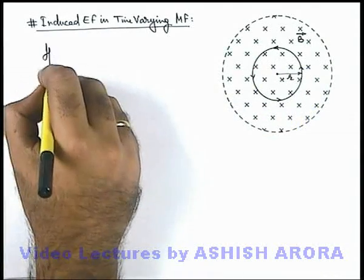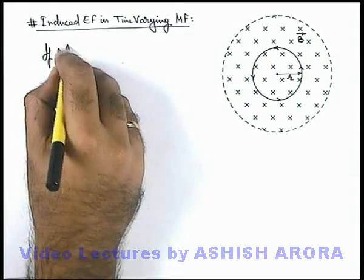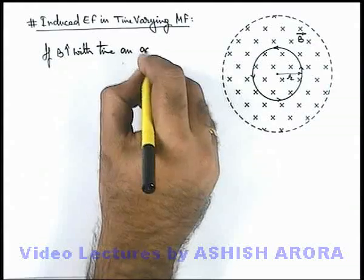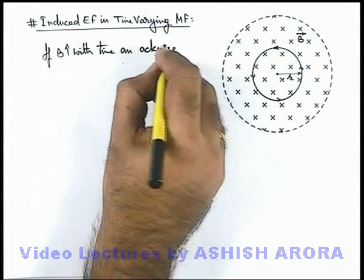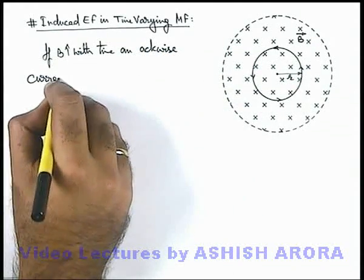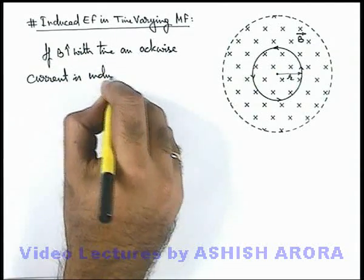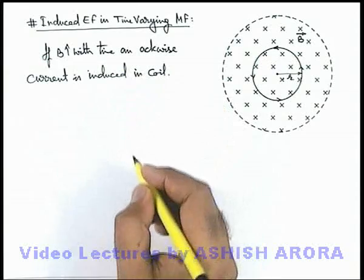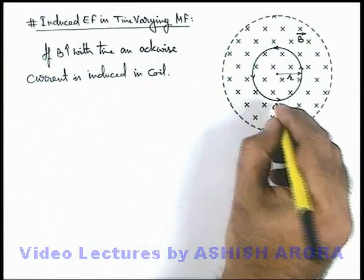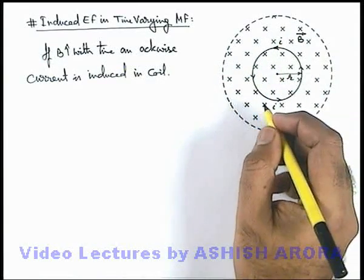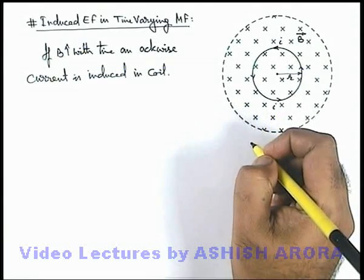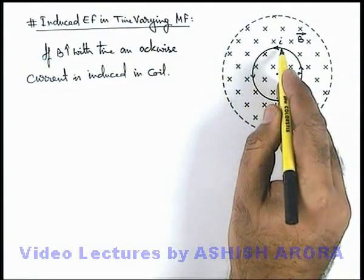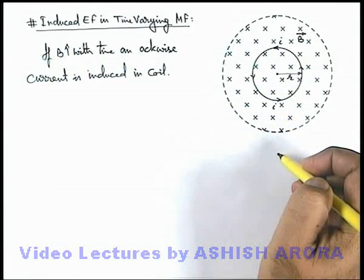If B increases with time, an anti-clockwise current is induced in the coil. Whenever there exists a current in a conductor, this current is established by an electric field. So we can say by symmetry, there exists some electric field within the conductor due to which the current is produced.